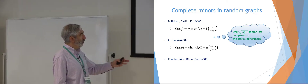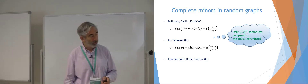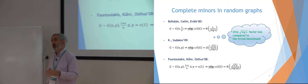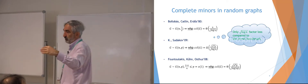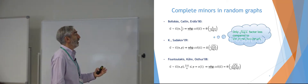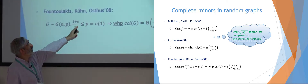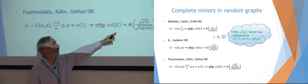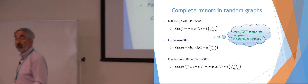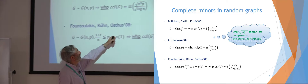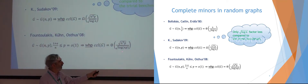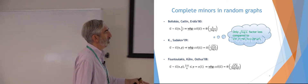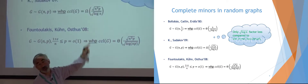This was taken further by Fountoulakis, Kühn, and Osthus in 2008, who studied the range of p all the way down to the supercritical range. Once p is above the critical value so you have a giant component, you can have a large complete minor. For example, if p is 1.1/N, typically you already have a complete minor of order sqrt(N). The difference from our result is that they managed to use log(Np) instead of log N, which matters for small values of p.